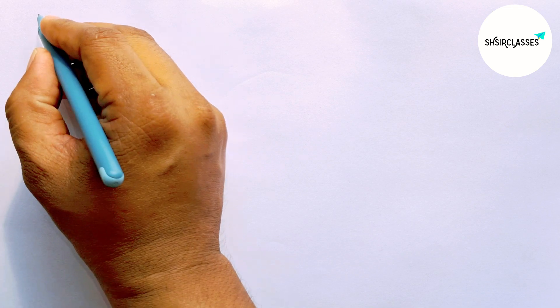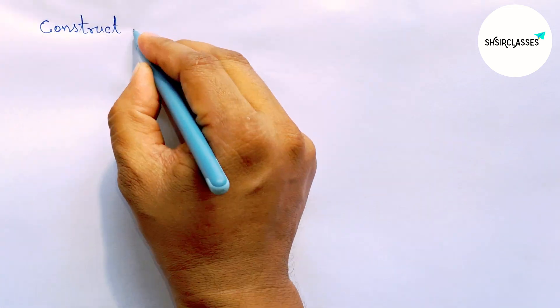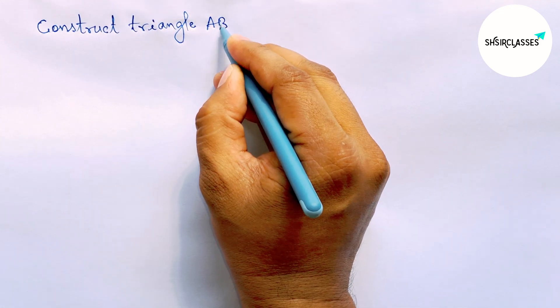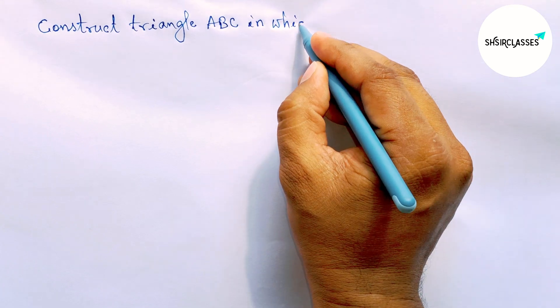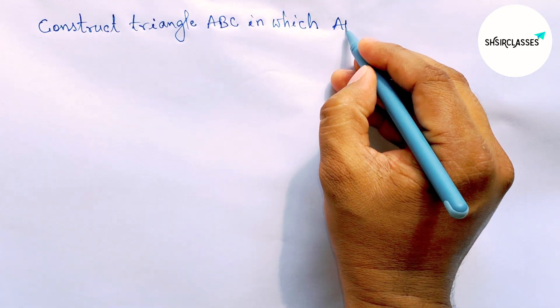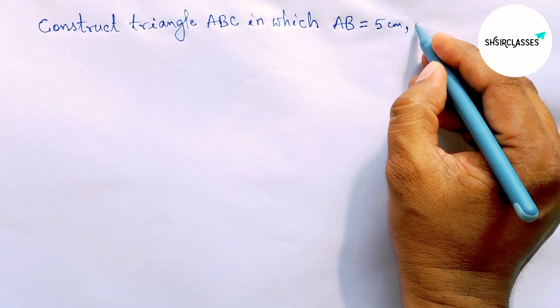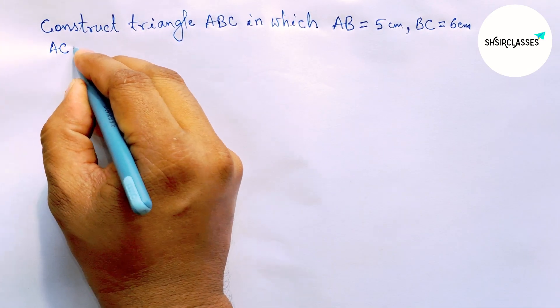Hi everyone, welcome to Say Share Classes. Today in this video, construct triangle ABC in which AB equals 5 centimeters, BC equals 6 centimeters, and AC equals 7 centimeters in an easy way. So please watch the video till the end.